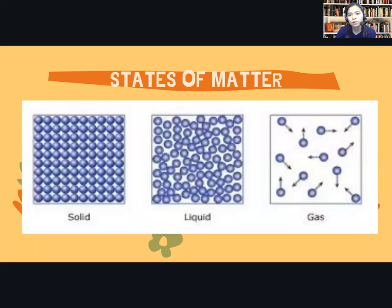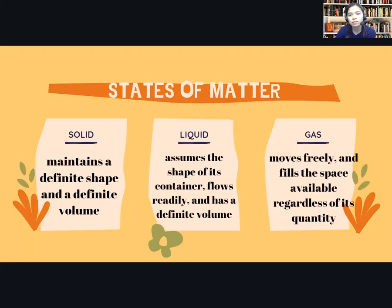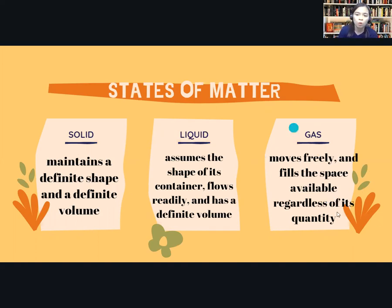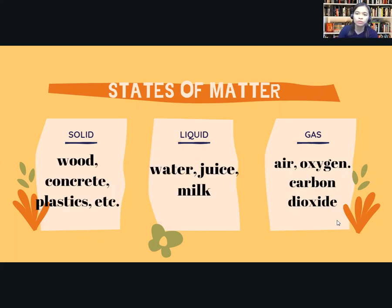So what is the difference between solid, liquid, and gas? Solid has a definite shape and definite volume. Liquid assumes the shape of its container, flows readily, and has a definite volume. Gas moves freely, fills the space available, and does so regardless of its quantity. That's all — thank you for watching and listening. Bye!